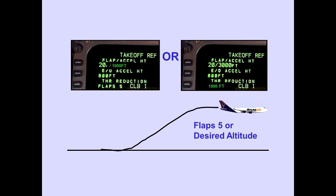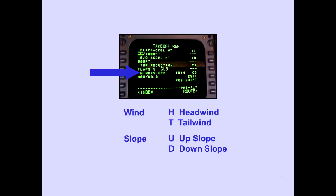The thrust reduction point is either flaps 5 setting or an altitude and can be changed by the flight crew. The armed climb thrust limit is also displayed. The wind slope line displays takeoff wind and runway slope. Winds are in knots: H is for headwind, T is for tailwind. Slope is in percent gradient: U is for upslope and D is for downslope. These entries can be changed by the flight crew.